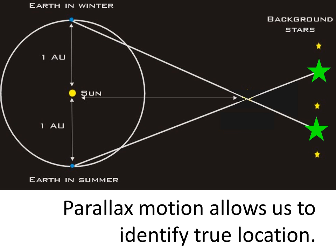Doing it with objects in space is no different. The only difference really is that we do not have a boat, but we do have two extremes — two ends of our orbit that we can use. We can use the furthest point to one side of the sun in winter, and the opposite side of our orbit six months later in summer. This gives us a very long baseline of two astronomical units, where one AU is the distance from the Earth to the sun.